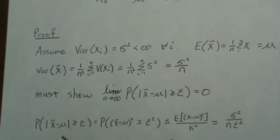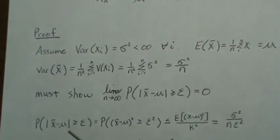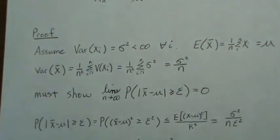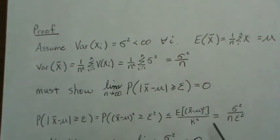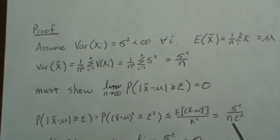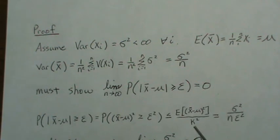So we note that, and we just saw this from Chebyshev's inequality, that this is equal to this, which then is less than or equal to this, and that's Chebyshev's inequality. And then this is X bar. So then, the variance of X bar is sigma squared over N, and then this K really should be epsilon squared.